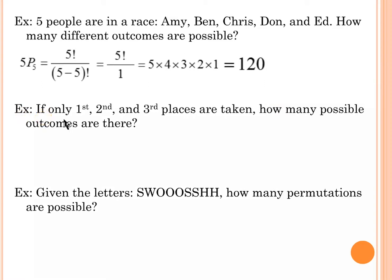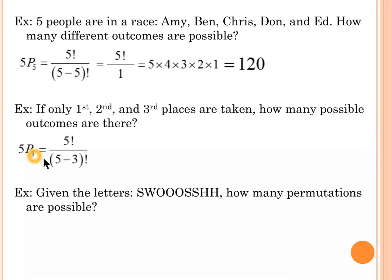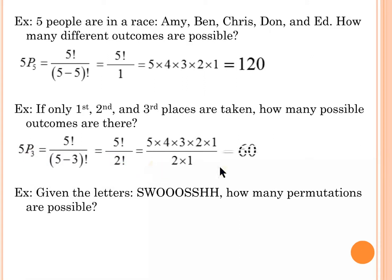If only first, second, and third places are taken, how many possible outcomes are there? That's simply 5 pick 3, which gives roughly 60 different ways.